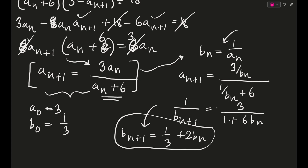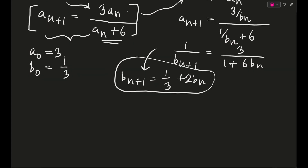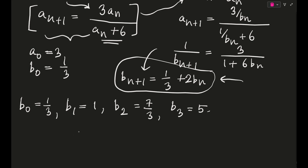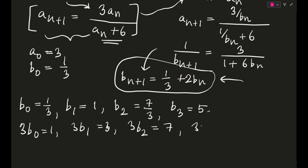Let me calculate a few values manually. b₀ = 1/3, b₁ = 1, b₂ = 7/3, b₃ = 5. Multiplying each by 3: 3b₀ = 1, 3b₁ = 3, 3b₂ = 7, 3b₃ = 15. Looking carefully at this pattern, we notice that 3bₙ = 2ⁿ⁺¹ − 1.